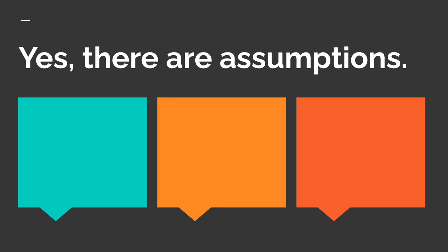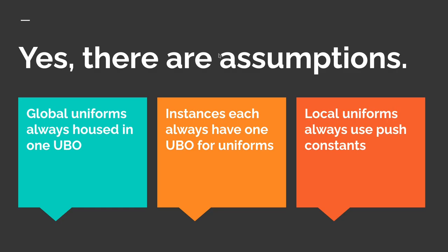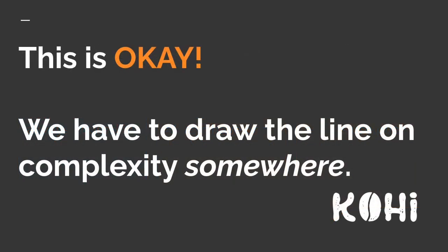There are still assumptions that we're going to make in this design. Global uniforms are always housed in a single UBO. Instances always have one UBO each for their uniforms. Local uniforms always use push constants. We have to draw the line in the sand somewhere — if we don't make some of these assumptions, we're going to wind up with such a complex system that it will take much longer to get up and going. We can always add those things later.